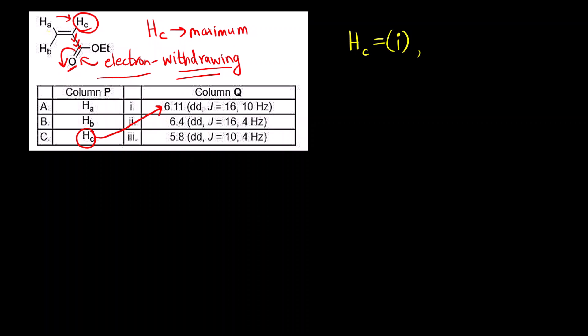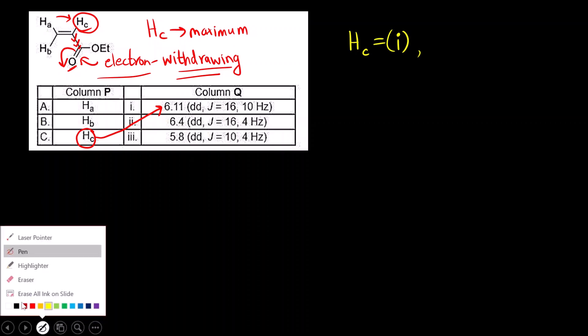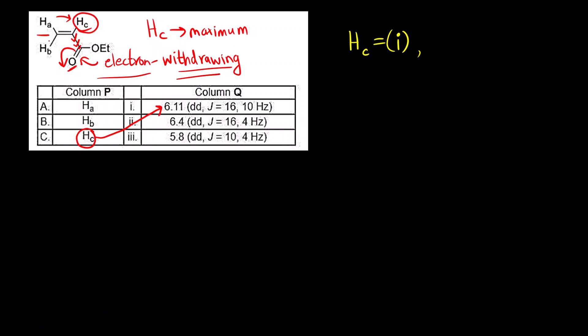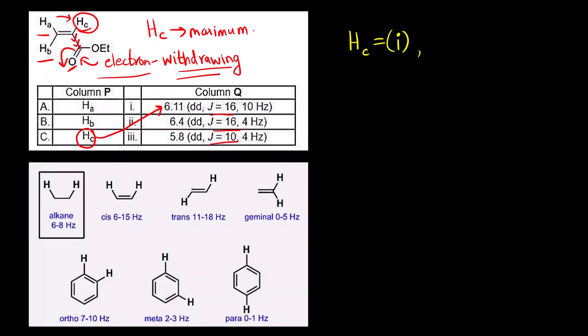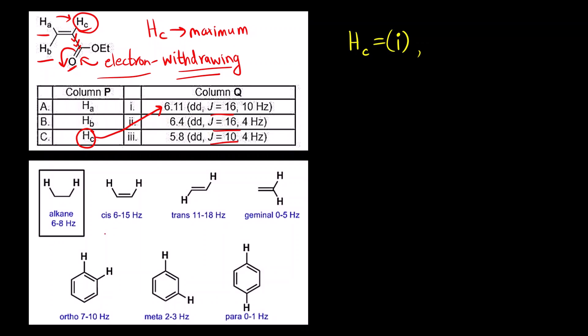Next is between H_A and H_B, how do you compare? For that, what is going to be helpful is this coupling constant value. This is a table for coupling constant of different protons. You can see alkane protons, the coupling constant is 6 to 8 hertz. This is cis coupling. Both are cis protons. So that is 6 to 15.